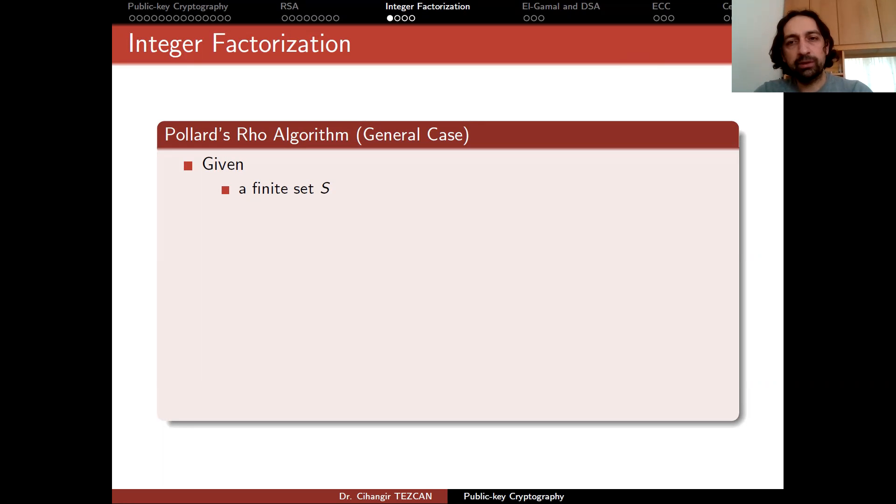So factorization algorithms are actually beyond the scope of this lecture because it should be investigated in a course about public key cryptography. But I want to show you briefly what can be done. So I will briefly mention Pollard's Rho algorithm. This is a general algorithm, but we can use it for integer factorization. I will in two slides briefly describe what can be done to show you that there are better ways of factorization than the trivial approach. So let's see the Pollard's Rho algorithm in the general case and then try to modify it for integer factorization.